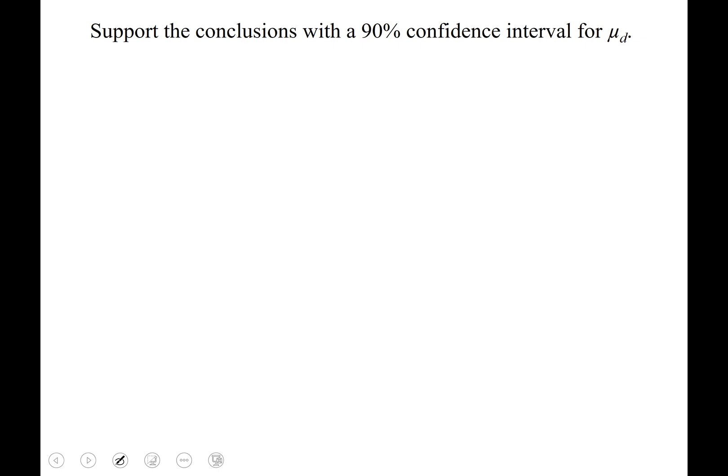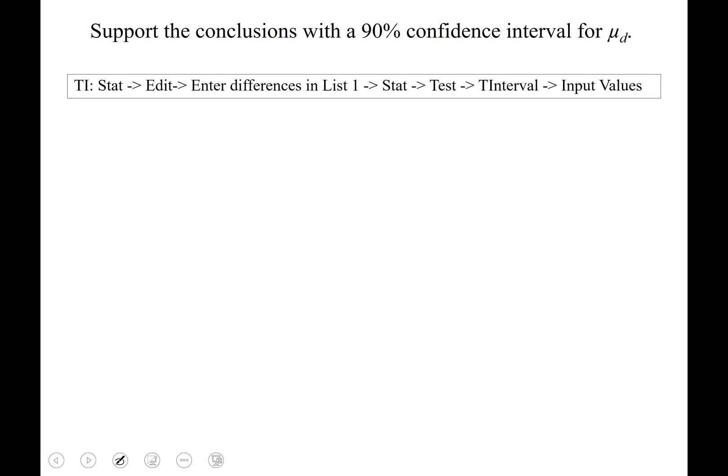Alright, let's support our conclusion with a 90% confidence interval for mu sub d. So we are going to hit stat, edit, and enter that data into list one. And then stat, test, and this time we are going to run the t interval.